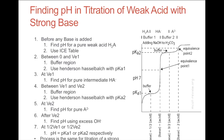The process is essentially the same for titration of a strong base with a weak acid — the curve just looks a little different. The starting pH will be higher and will decrease over time as acid is added.